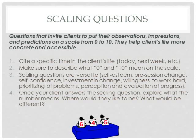Once your client answers the scaling question, explore what that number means, where they'd like to be instead, and what would be different. Going back to the confidence question — if my client says a 7, I can ask, 'A 7, that's pretty high on that scale — so what about that makes it a 7 for you? What tells you that you're at a 7?' The reason to explore the number further is that a 7 for me might be pretty good but not the top, whereas for your client a 7 might be right where they're hoping to be. Or what you imagine a 7 to mean might be very different from your client's perception. We want to come from the posture of not knowing, so explore what the 7 looks like.